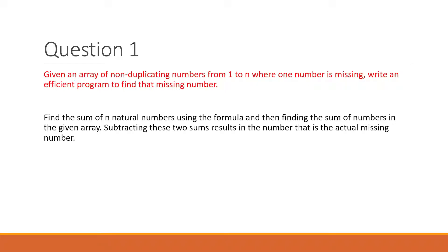This is a mathematically based question. We know the formula for sum of 1 to N numbers: N*(N+1)/2. For example, from 1 to 10 the sum is 55, but if 5 was missing, the sum would be 50. By subtracting the actual sum from the formula sum, we get the missing number.